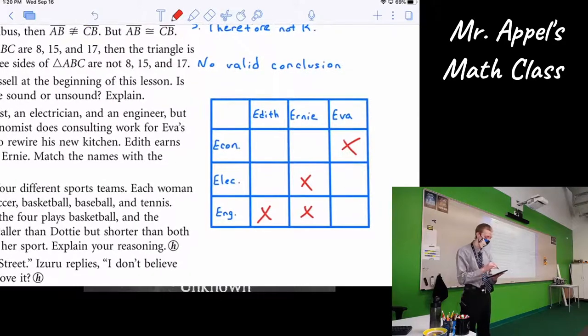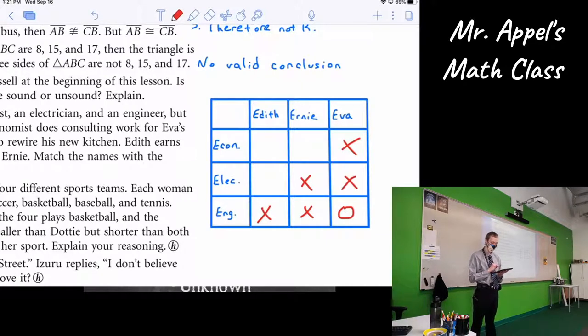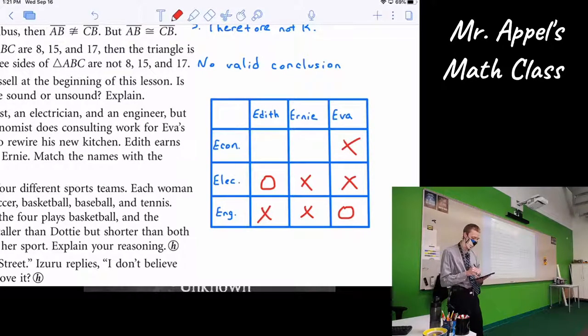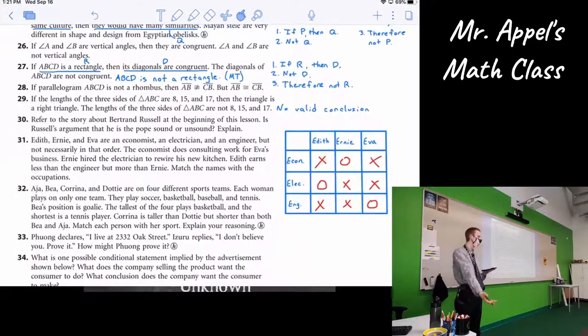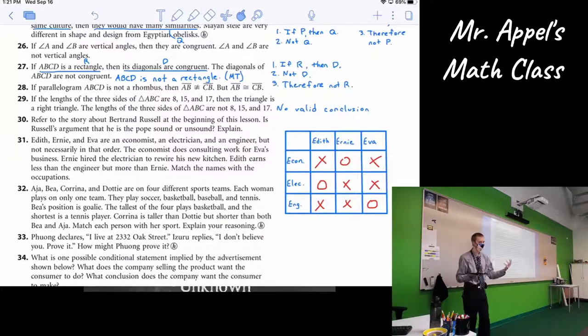And now we're running out of possibilities. Across this bottom row here, there's only one opening left. It has to be Eva is the engineer. And if Eva is the engineer, she's not an electrician, which once again leaves only one opening left. Edith must be the electrician. And similarly, we can look on the columns and say, hey, Ernie has been eliminated from electrician and engineer. The only thing left for him is he's got to be the economist. And then, of course, Edith is not the economist. So again, we could write all of that up. That's not our goal here. We're just trying to figure it out. So tracking the information is the important thing here. My recommendation is a grid like this.